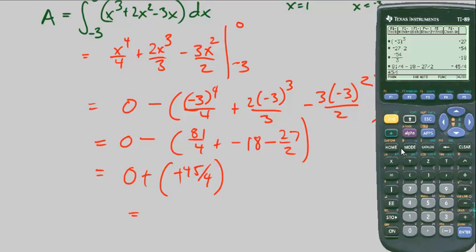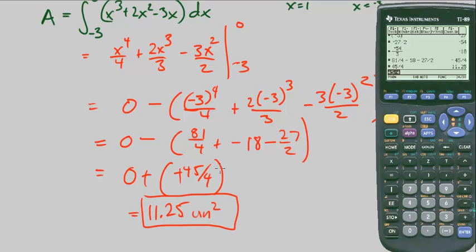I'm going to get it approximately. So 45 divided by 4, or just put it in decimal form. It's 11.25 in its area, units squared. Alright, so that ends CPM Calculus Chapter 4, number 109.